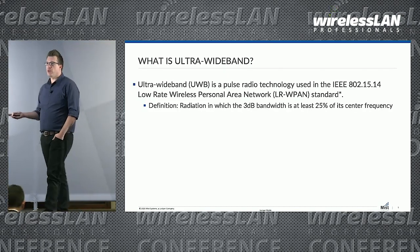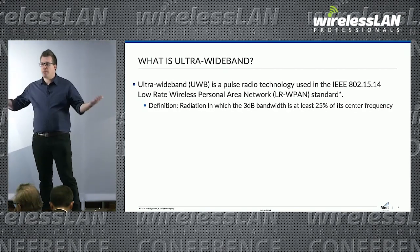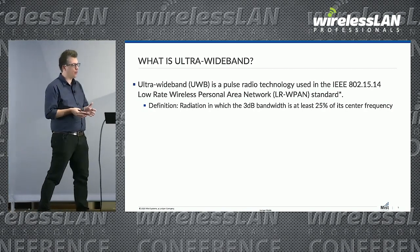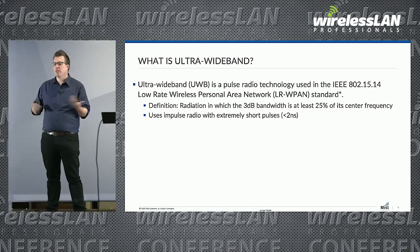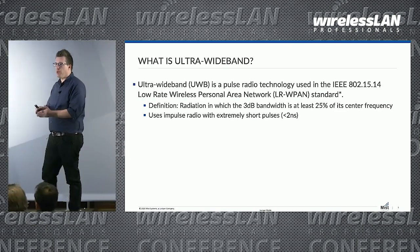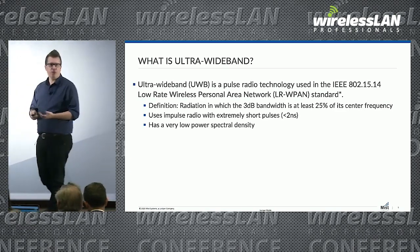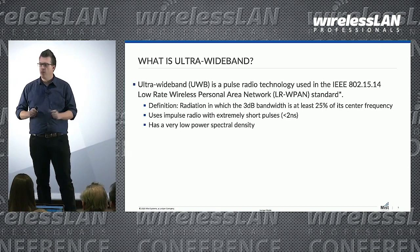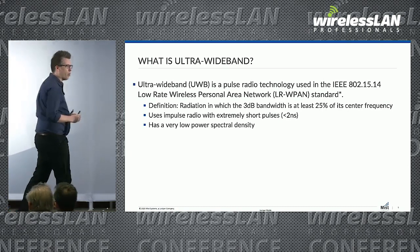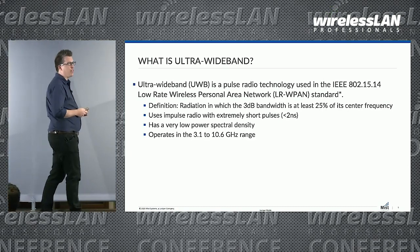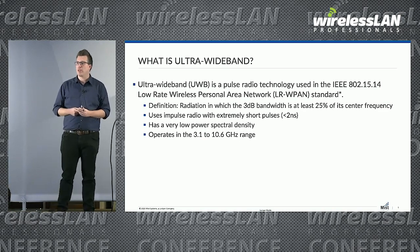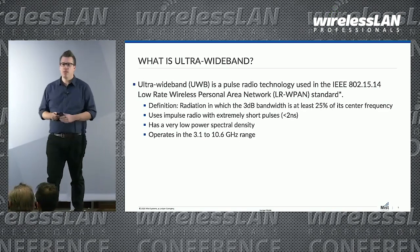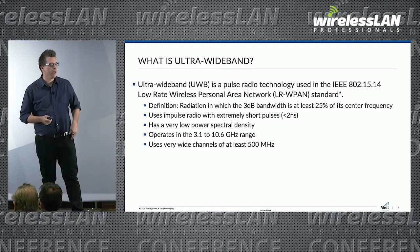The definition of ultra-wideband is that the 3 dB bandwidth is at least 25% of the center frequency of a radio transmission. It uses short pulses of really low power spectral density — wide bandwidth, really low power. It operates in the 3.1 to 10.6 gigahertz range, with some support for sub-gigahertz as well, but the 3.1–10.6 GHz range covers the majority of what we're seeing right now.